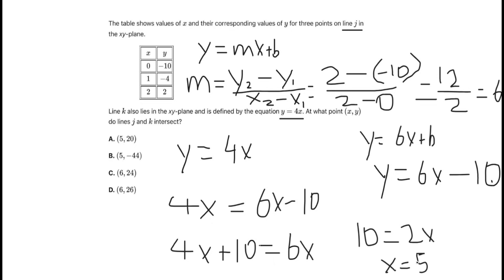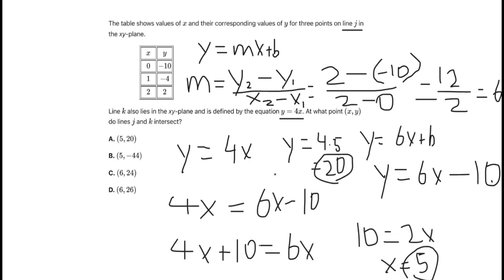Now that we know x equals 5, we plug it back into either equation. Using y equals 4x: y equals 4 times 5, which equals 20. So we've found our answer — the point (x, y) where lines j and k intersect is (5, 20). The answer is A.